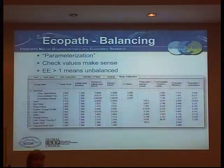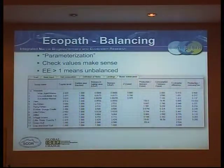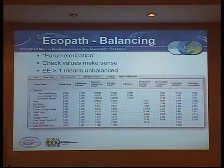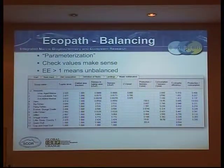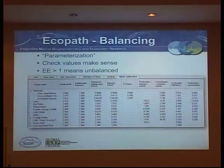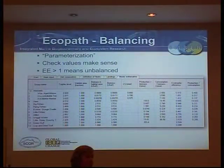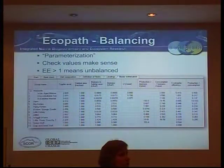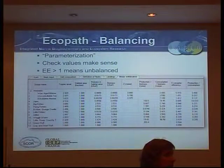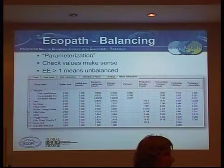Your ecotrophic efficiency is greater than one — meaning you're trying to use more than you produce. So you can see that for the wise mermaids we started off with an ecotrophic efficiency close to six, meaning we're trying to use six times what was produced. So obviously the fishing effort, as we set it, is too large.